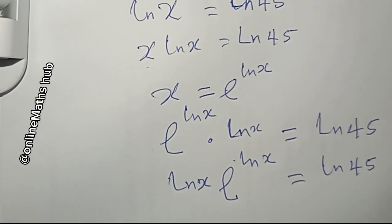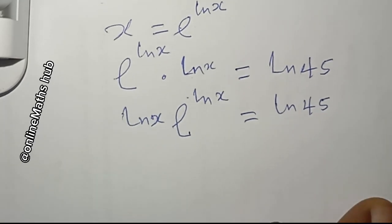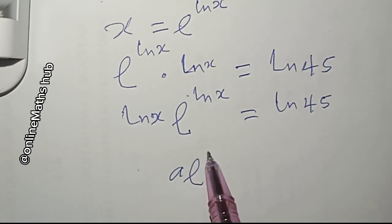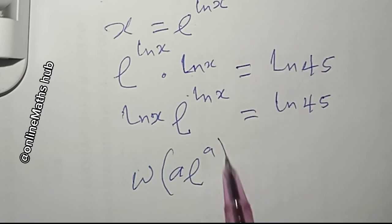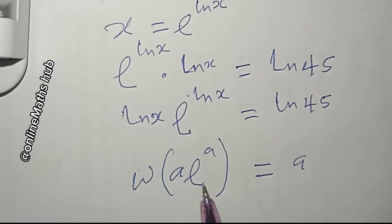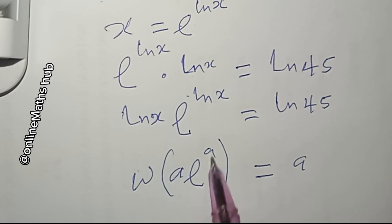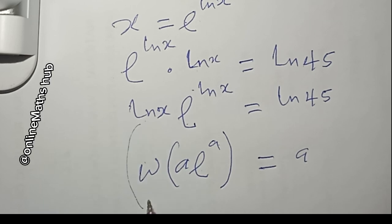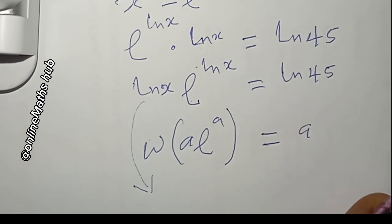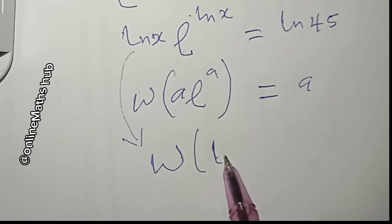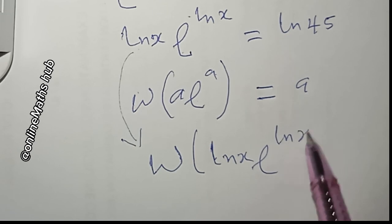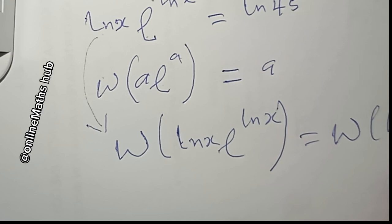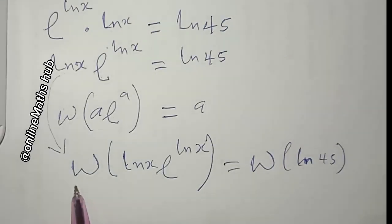Now I'm going to utilize the Lambert W function. If you have a·e^a and apply the Lambert W function to it, you get back a. We can see that pattern here, where a = ln(x). So I'll apply the Lambert W function to both sides: W(ln(x)·e^(ln x)) = W(ln(45)).